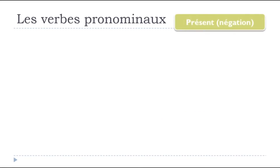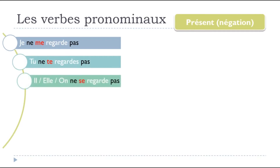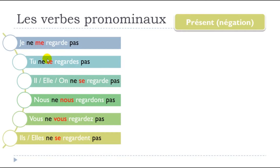So let's have a look at the present tense with the negative form. Normally, the official way would be: JE NE ME REGARDE PAS. TU NE TE REGARDE PAS. IL, ELLE, ON NE SE REGARDE PAS. NOUS NE NOUS REGARDONS PAS. VOUS NE VOUS REGARDEZ PAS. ILS, ELLES NE SE REGARDENT PAS. These are the official and formal negative forms of SE REGARDER — you start with NE, then the reflexive pronoun and verb, then PAS.